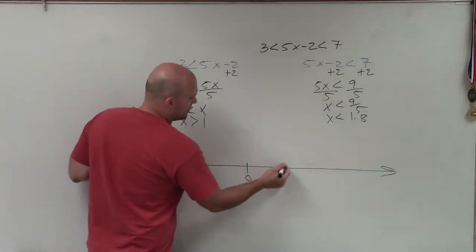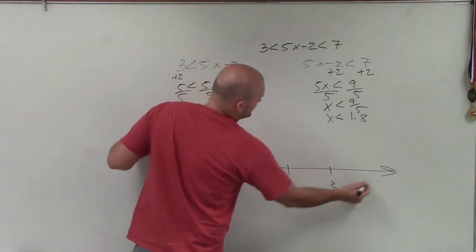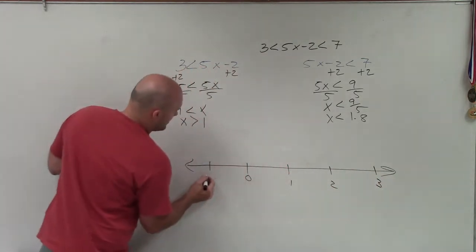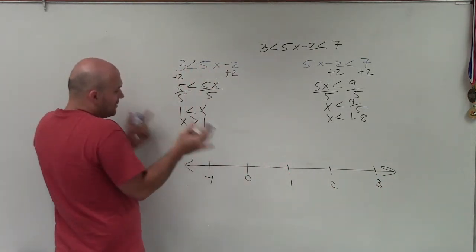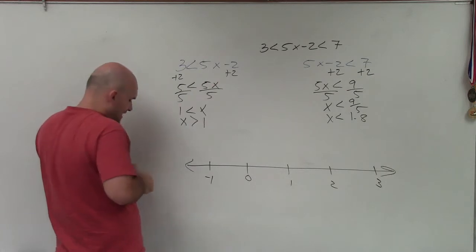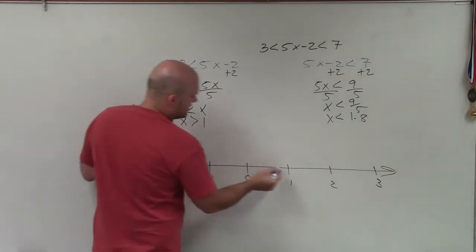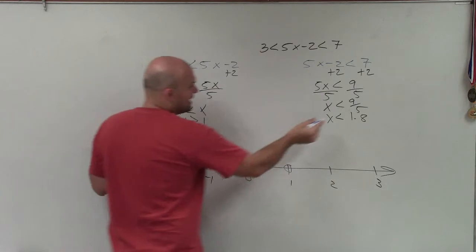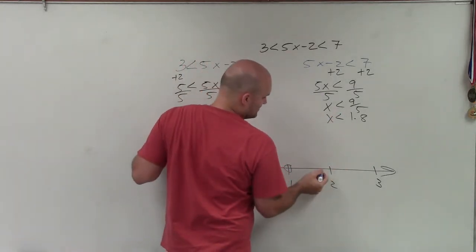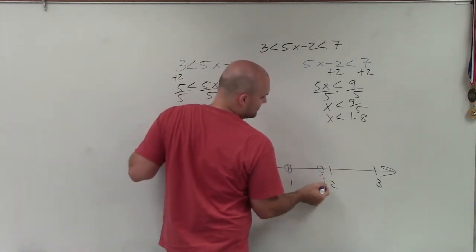So here I have 0, we'll do 1, 2, 3, and negative 1. So now what I'm going to do is I'm just simply going to take the values that I have found, my solutions. x is greater than 1, so I make a circle. And x is less than 1.8, which I'll kind of estimate is right there.